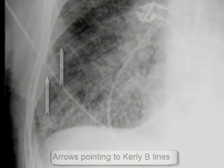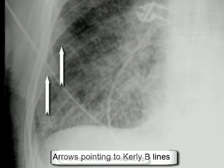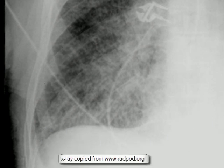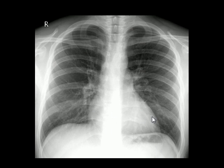This chest X-ray shows diffuse consolidation and Kerley B lines near the right costophrenic angle, and pleural effusion at the left costophrenic angle. Another chest X-ray is shown to demonstrate a healthy normal lung with normal costophrenic angles and normal cardiac size.